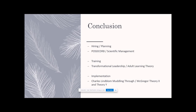In conclusion, we discussed hiring and planning with the POSDCORB theory, as well as scientific management and how it can be used to track positive and negative outcomes of cases based on a public defender's caseload. For training, we discussed transformational leadership and the adult learning theory. For implementation, we discussed Lindblom's incremental model and muddling through, as well as McGregor's Theory X and Theory Y of motivation.